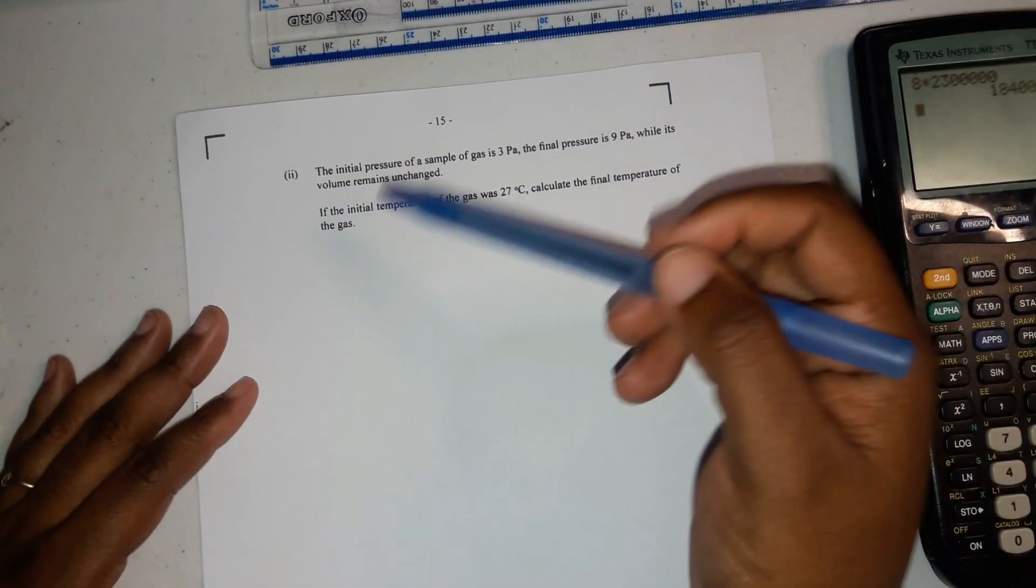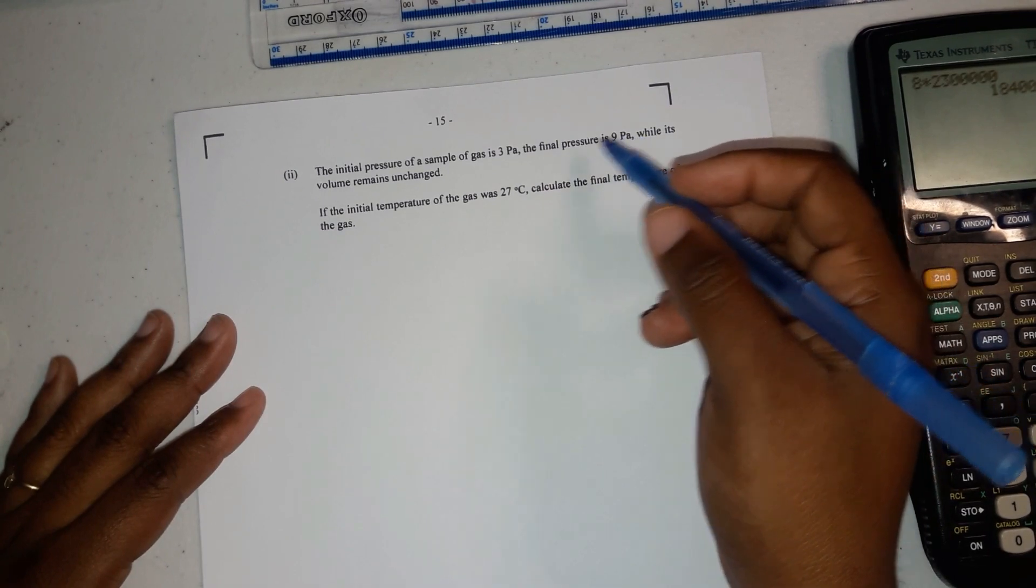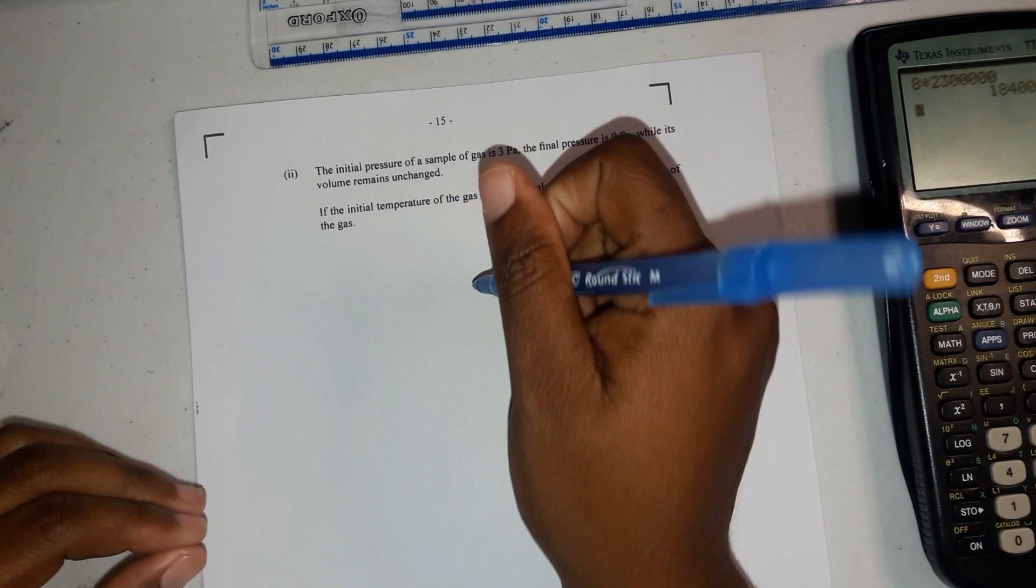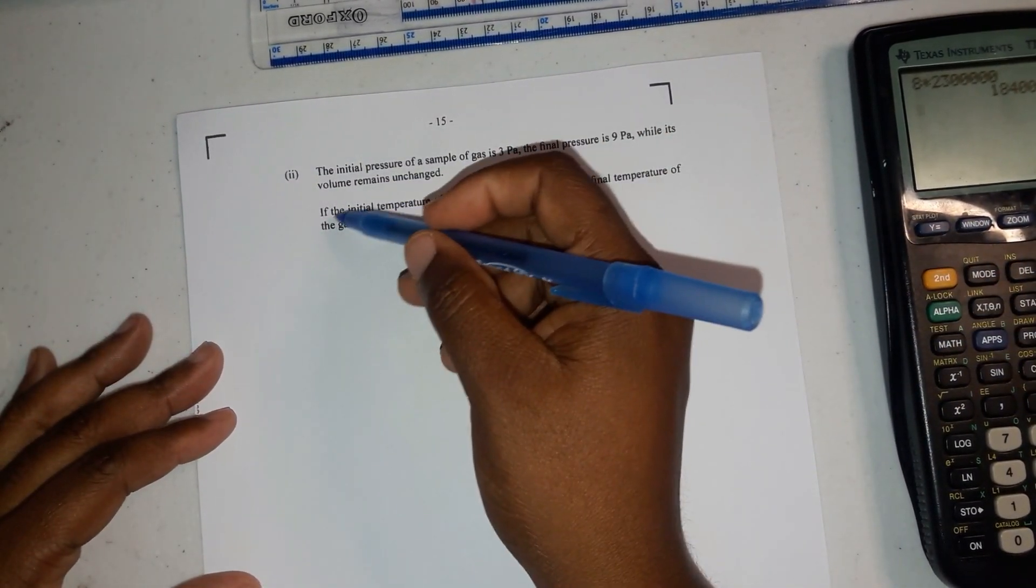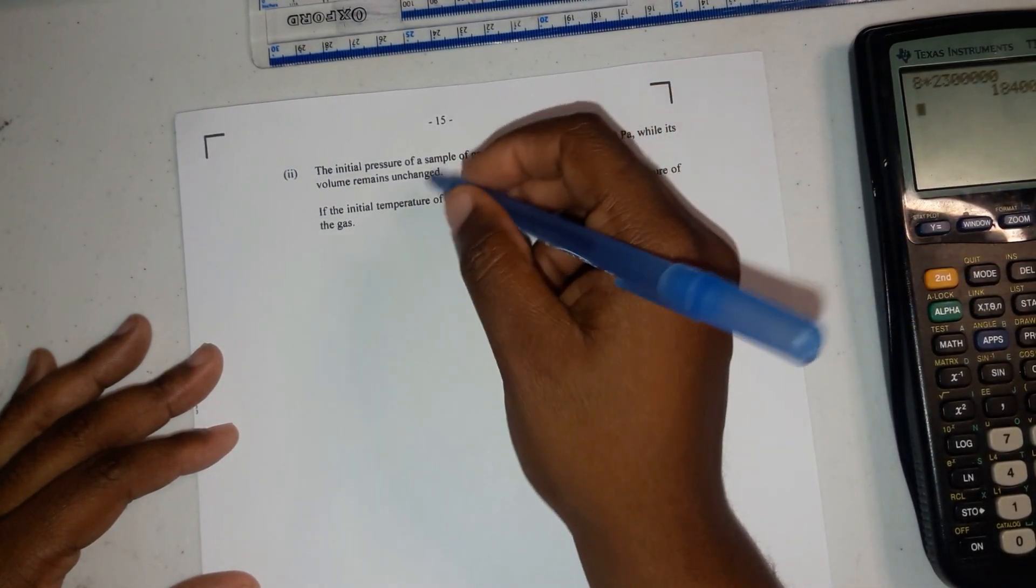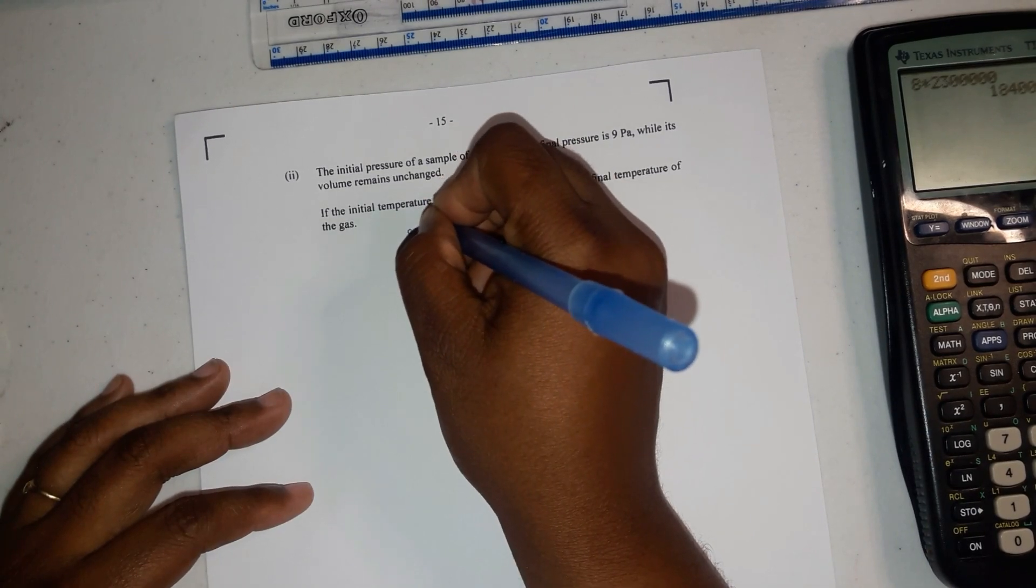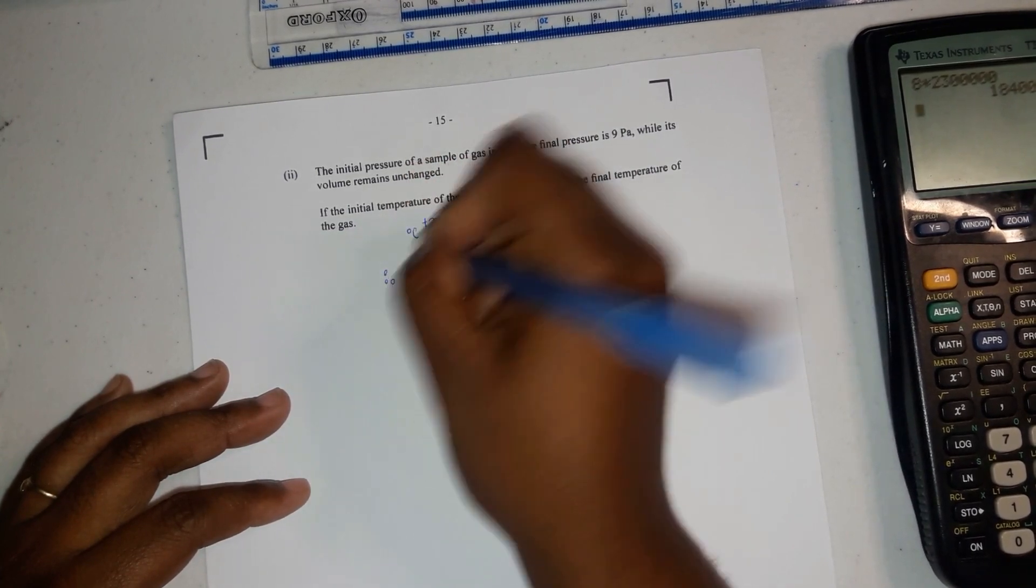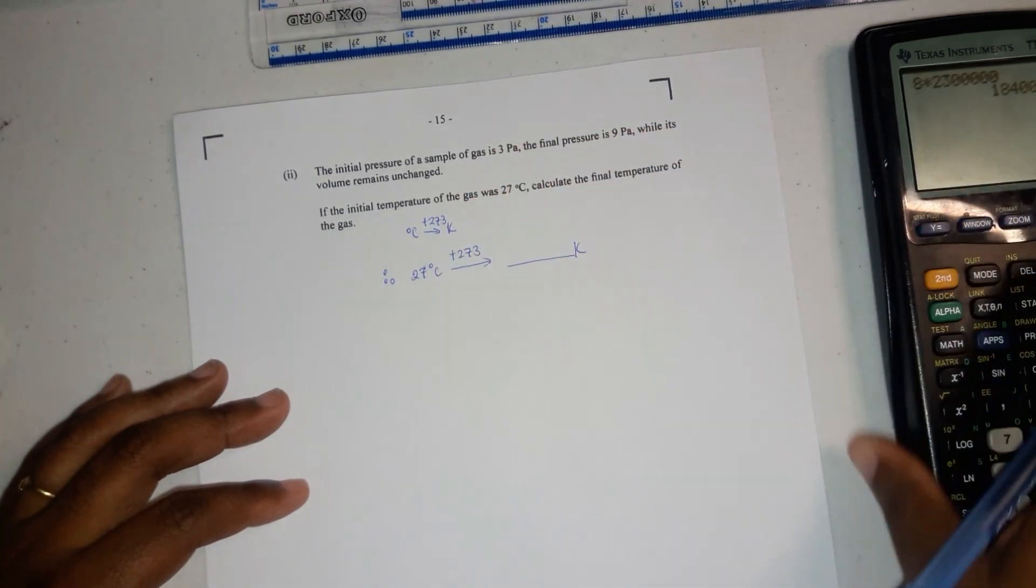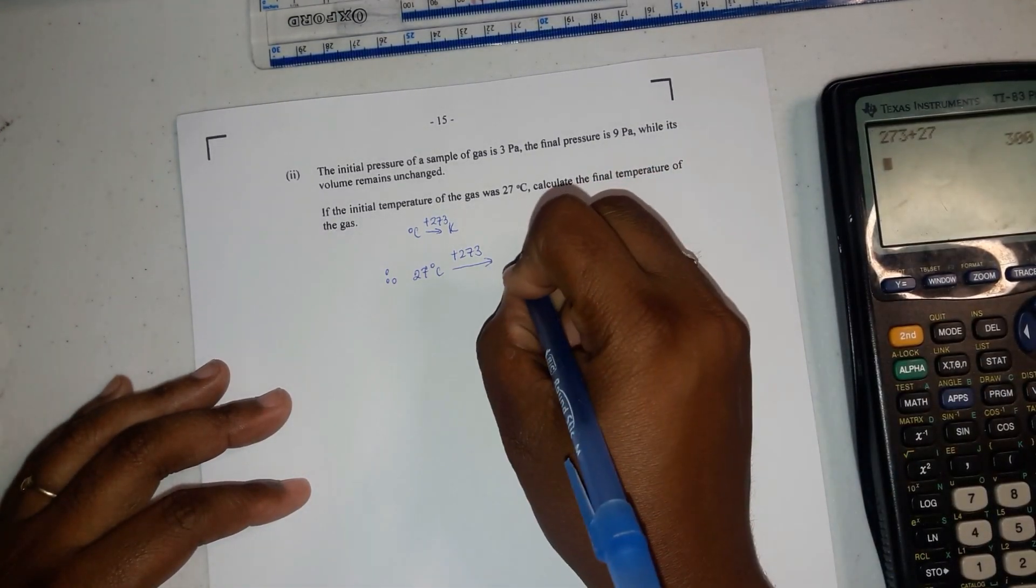Then it's on to another calculation. The initial pressure of a sample of gas is 3 pascals, the final pressure is 9 pascals while its volume is unchanged, so the volume is constant. Since it's constant, it wouldn't be in the equation. Once something is constant, you don't include it in the equation. If the initial temperature of the gas is 27 degrees Celsius, calculate the final temperature of the gas. Whenever you're dealing with temperature in the gas laws, you have to convert degrees Celsius to Kelvins, and to do that you just add 273. So 27 degrees Celsius to Kelvin will be add 273, and that gives you 300 Kelvin.